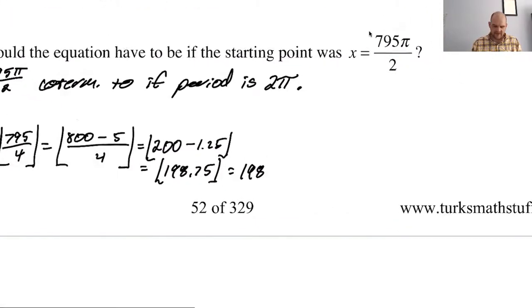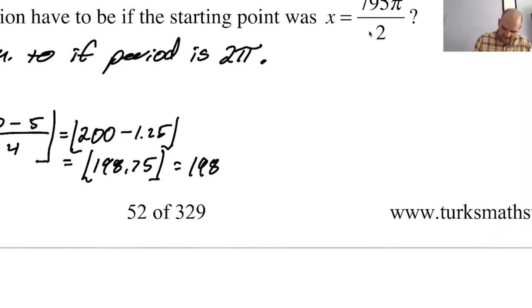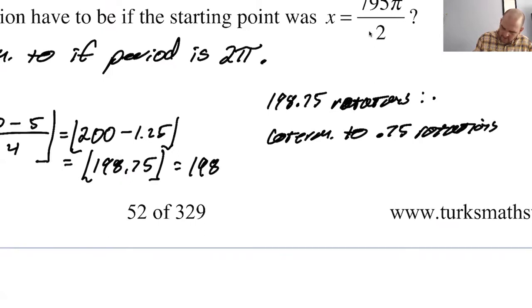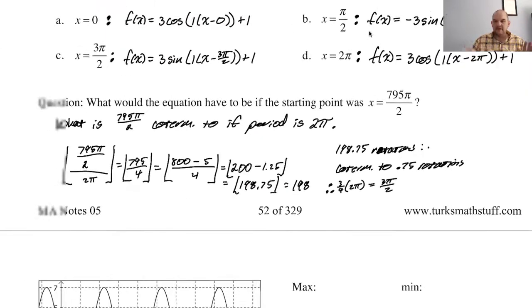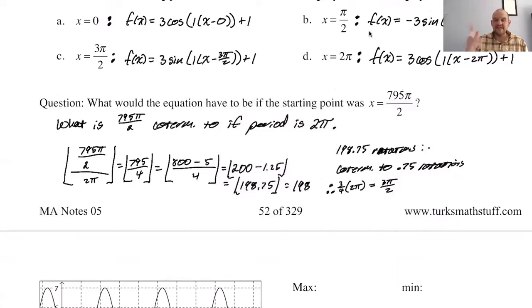So I'm actually going to do it a slightly different way. I'm going to say, it's 198.75 rotations, therefore co-terminal to 0.75 rotations. So that's three fourths of two pi, which is three pi over two. So it's the same as three pi over two. 795 pi over two is the same as three pi over two, which means that if we wanted to write a function for this, I have to move everything.